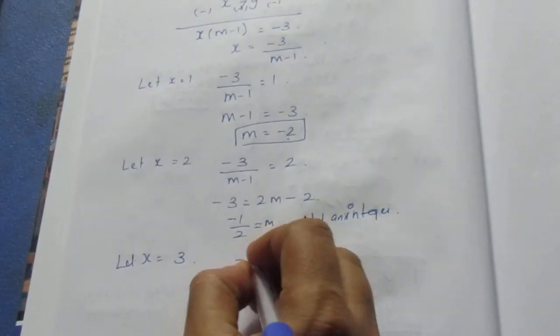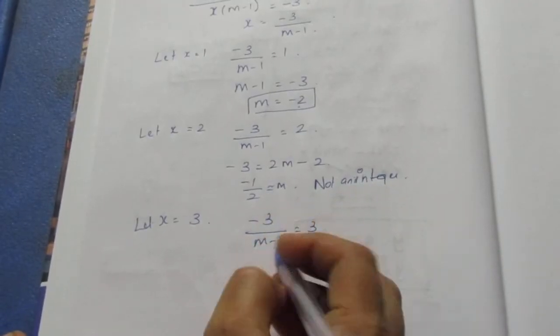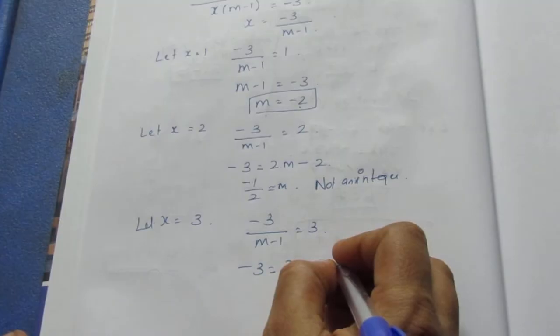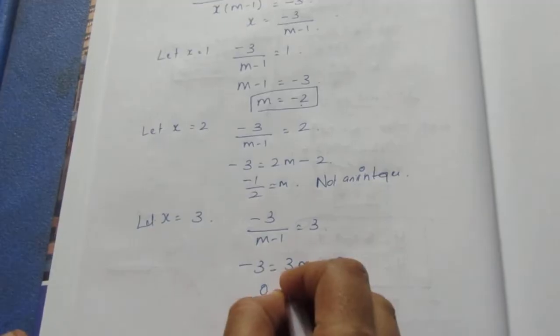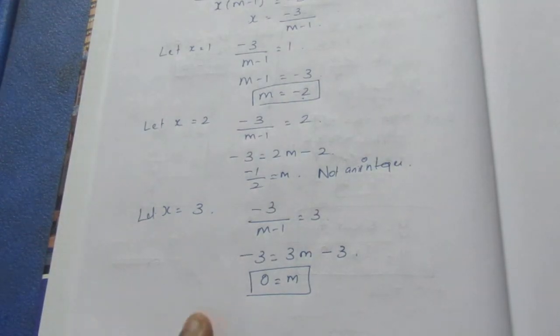Let x = 3. Then -3/(m - 1) = 3, so -3 = 3m - 3, giving 3m = 0, so m = 0. Both x = 3 and m = 0 are integers, so this is valid.